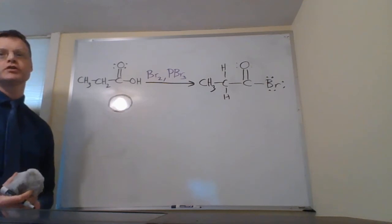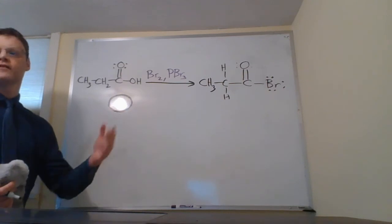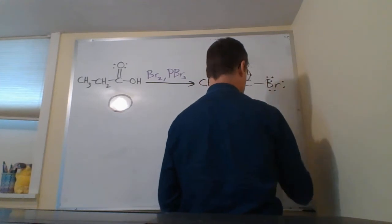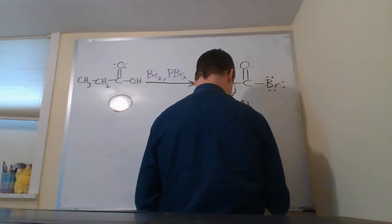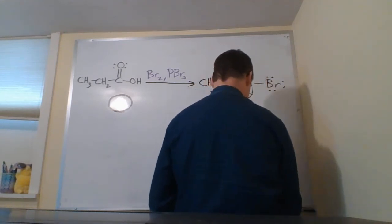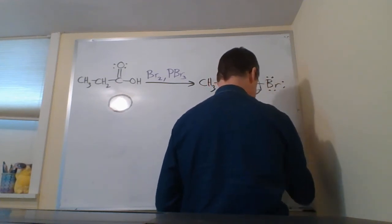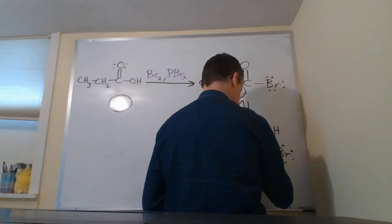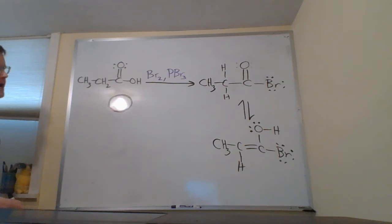And then the rest of what's going to happen is going to follow our mechanism that we saw in the previous lecture of acid catalyzed alpha halogenation. At first we have two proton transfers that are going to tautomerize this from the keto to the enol form, and I'm not going to show both of those proton transfers—you can look at the previous videos if you want to see that.